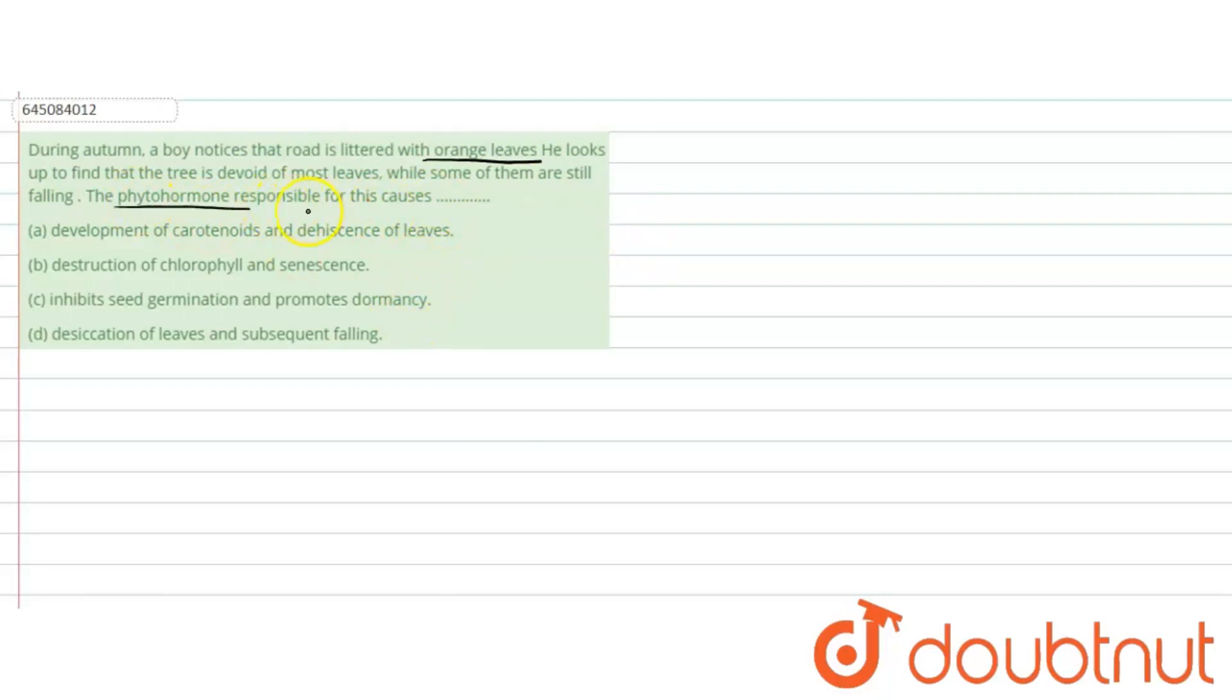The phytohormone responsible is abscisic acid, also known as ABA. This is the only hormone which promotes seed dormancy, so it promotes seed and overall growth dormancy. It doesn't promote the normal growth and development of plants; rather, it inhibits the growth and development of plants by promoting dormancy.